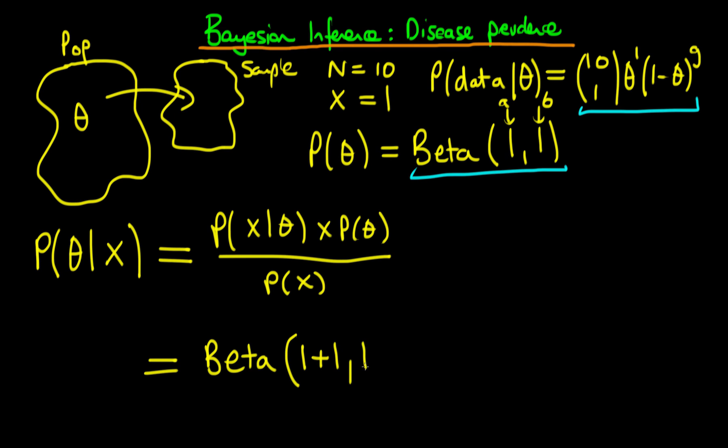So this is just equivalent to a beta distribution which has got first argument 2 and second argument 10.